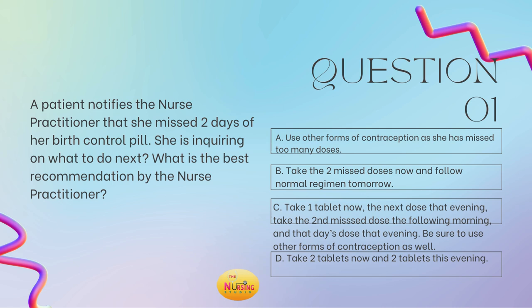Think about it: if they've missed two days of birth control, that's a total of four pills we need to get taken and caught up. So we'll take two a day — one in the morning, one in the evening. You're not going to tell them to take two tablets now and two in the evening. You don't want to just say they missed too many — if it was three missed doses, then you would have gone with that. But you can miss one or two doses and C is your best answer here.